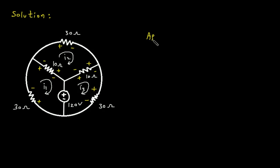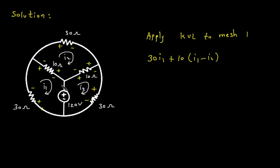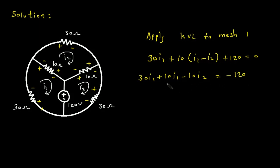Now we will apply KVL to mesh number 1. Starting from here: plus 30I1, then plus 10(I1 minus I2), plus 120 equals 0. This gives 30I1 plus 10I1 minus 10I2 plus 120 equals 0, or 40I1 minus 10I2 equals minus 120. Let's call this equation number 1.